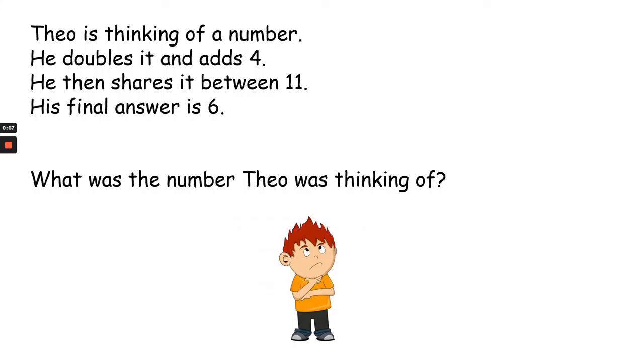We're going to start off today with Theo thinks. Theo's thinking of a number. He doubles it and adds 4. He then shares it between 11. His final answer is 6. But what was the number that Theo was thinking of?